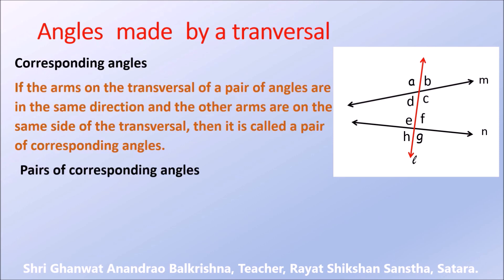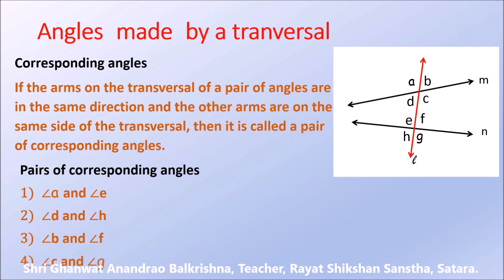Now let us see the pairs of corresponding angles. First: angle A and angle E. Second: angle D and angle H. Third: angle B and angle F. Fourth: angle C and angle G. So there are a total of four pairs of corresponding angles when a transversal intersects two given lines.